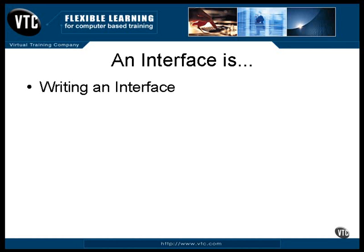An interface is abstract. It contains method definitions, but not method bodies, just like an abstract class. An abstract class can also contain some non-abstract method body definitions, but an interface contains only abstract method definitions. They have no bodies.